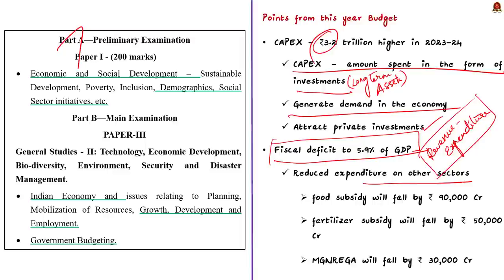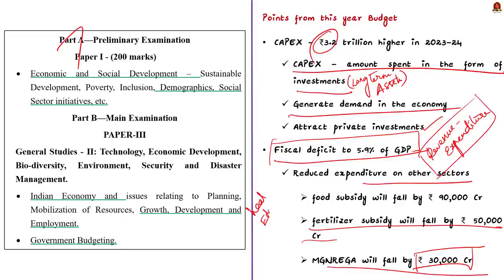Compared to the previous year, in 2023–24 the union government's expenditure on food subsidy will fall by ₹90,000 crore, fertilizer subsidy will fall by ₹50,000 crore, and MGNREGA (Mahatma Gandhi National Rural Employment Guarantee Act) by ₹30,000 crore. There is a marginal increase in allocation to health, education, agriculture, and the Ujjwala scheme, but if we take into account the effect of inflation, this marginal rise will not make a big impact.